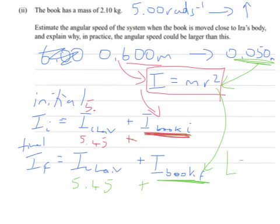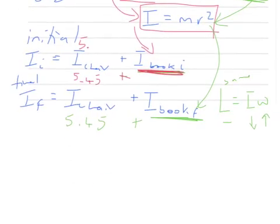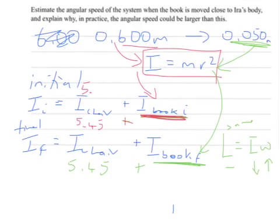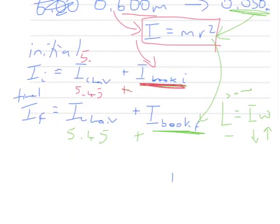From our angular momentum, that has to stay the same, and our inertia times omega: our inertia is decreasing, so our omega has to increase to keep L the same. We're trying to find omega final. Omega equals L over I, so the change in omega will be by the same proportion that L over I changes. You can substitute the first value in for I.